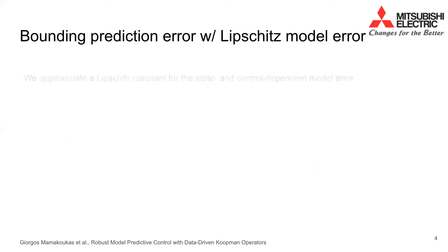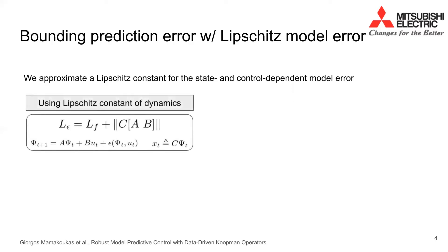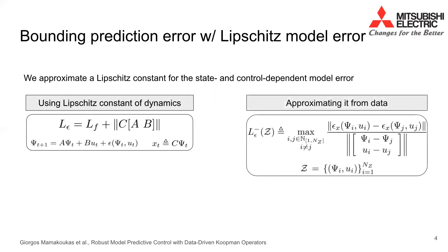Our approach assumes that the unknown dynamics are Lipschitz continuous and uses the training error of data-driven Koopman models to approximate the Lipschitz constant for the state and control dependent model error. If the Lipschitz constant of the dynamics is known, one can use the formula we have derived to compute the Lipschitz constant for the model error. Alternatively, and what we used in our experiments, one can also approximate a lower bound for the Lipschitz constants from the training measurements, as shown here.